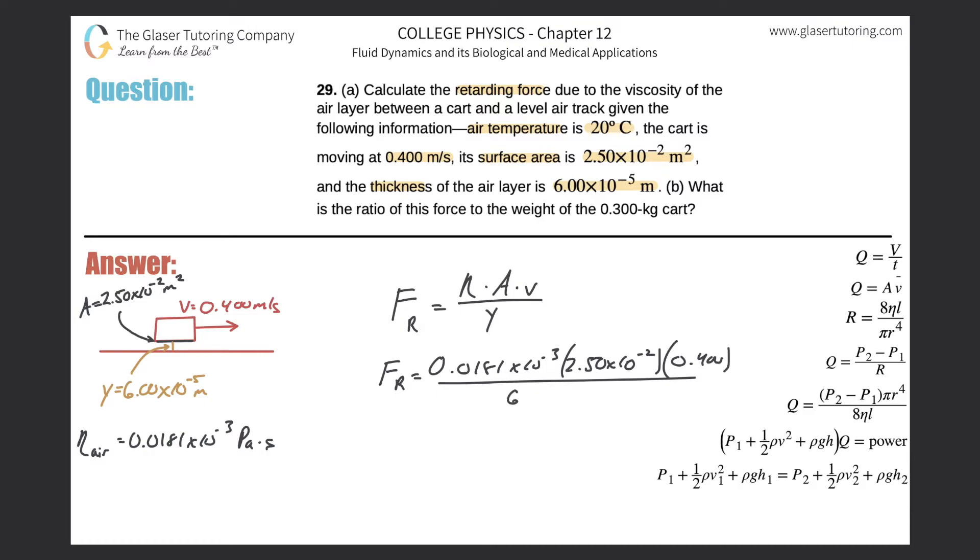that's all then divided by the thickness of 6.00 × 10^-5. And here we go, we can find that retarding force or that force that opposes the motion.